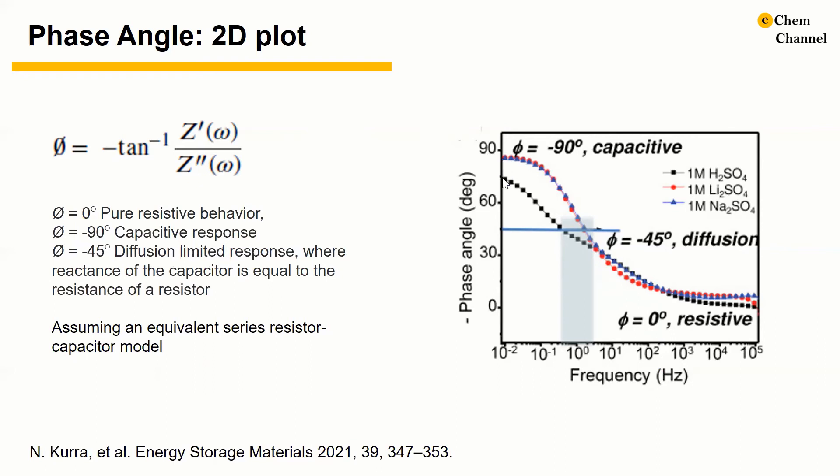In the case of lithium sulfate and sodium sulfate, the titanium carbide MXene electrode reaches a phase angle about negative 85 degrees, and it is only negative 73.4 degrees in sulfuric acid electrolyte. The lower phase angle in the sulfuric acid electrolyte is due to the dominant redox process at low frequency in the acidic electrolyte.